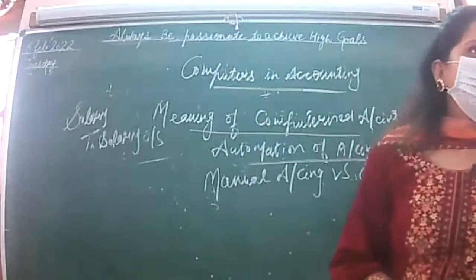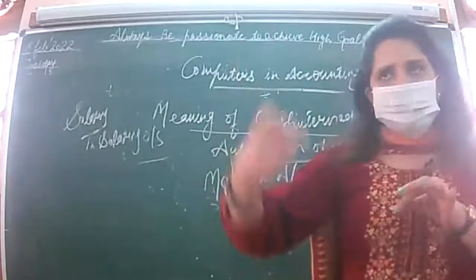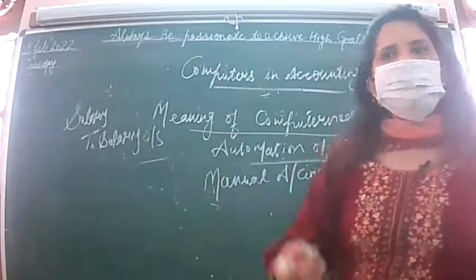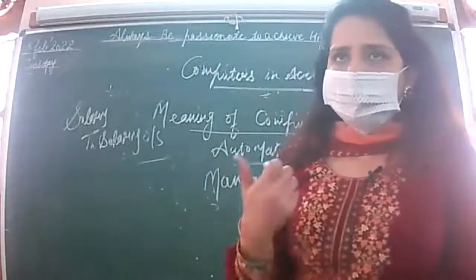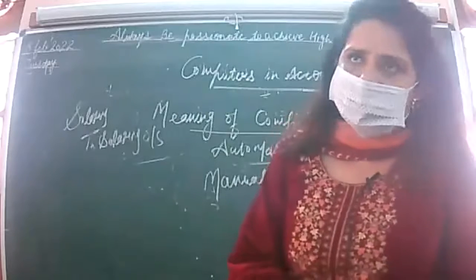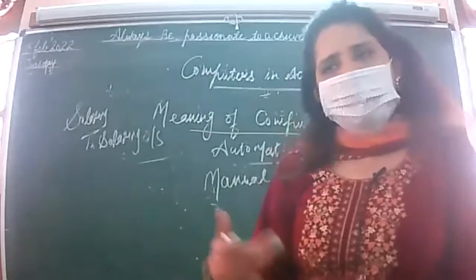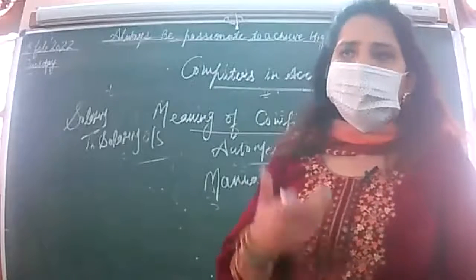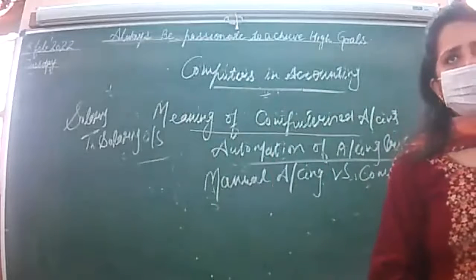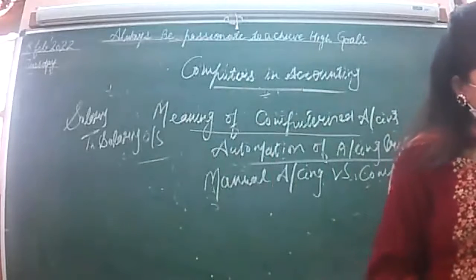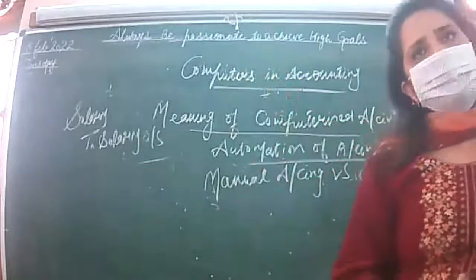Finally, financial statements preparation: in manual accounting you prepare the trading account, get the gross profit as the balancing figure, then the P&L account for net profit or net loss, and afterwards prepare the balance sheet. In computerized accounting all of this is automated — you just give commands. These are the points of difference; the comparison covers all the steps of your accounting process. Done.